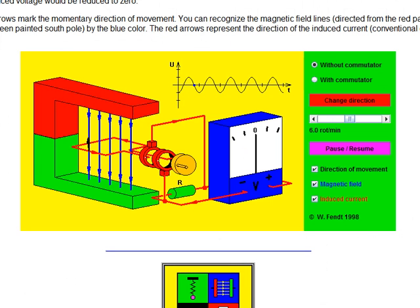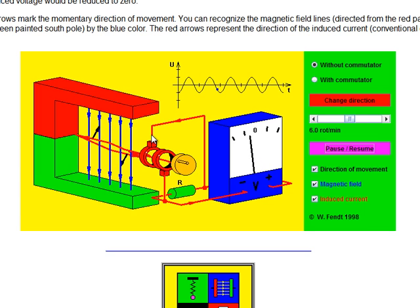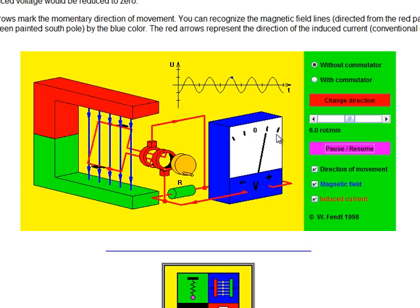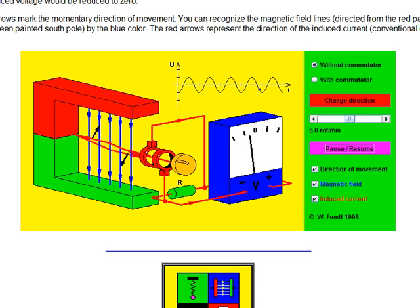Let's have a look at that in action with a generator. We've got the two slip rings — this point here is attached to this side of the coil. At maximum flux we have zero EMF. As it begins to rotate, maximum voltage occurs when the field lines are being cut. The voltage keeps oscillating from positive to negative in half a rotation, and then back to positive voltage again after another half rotation.